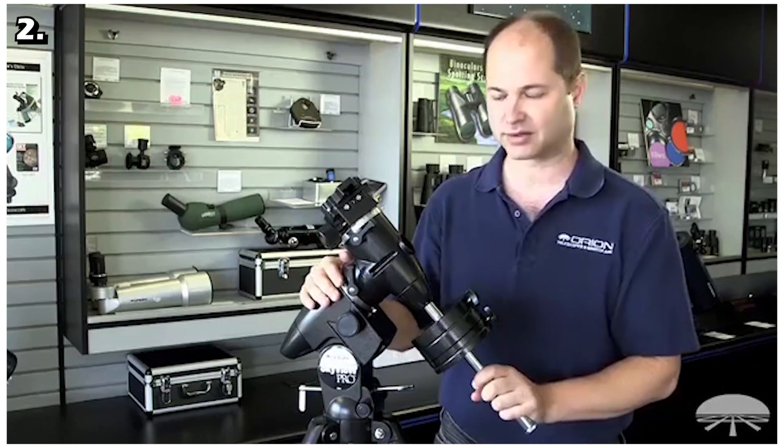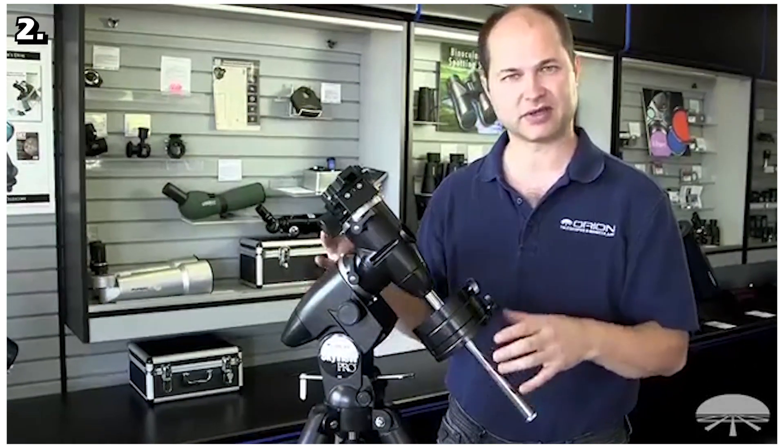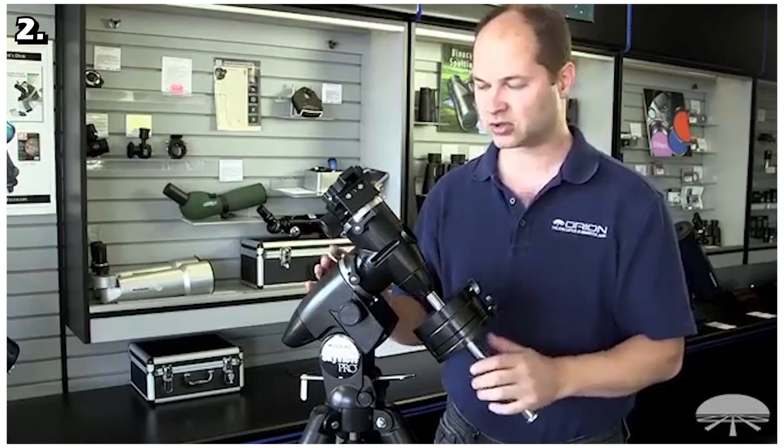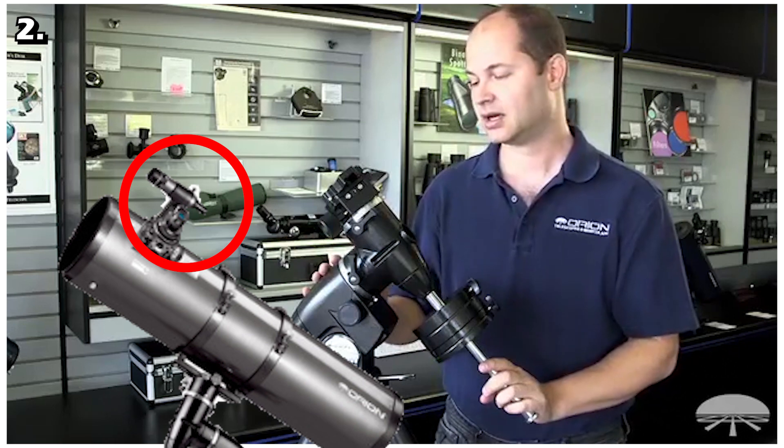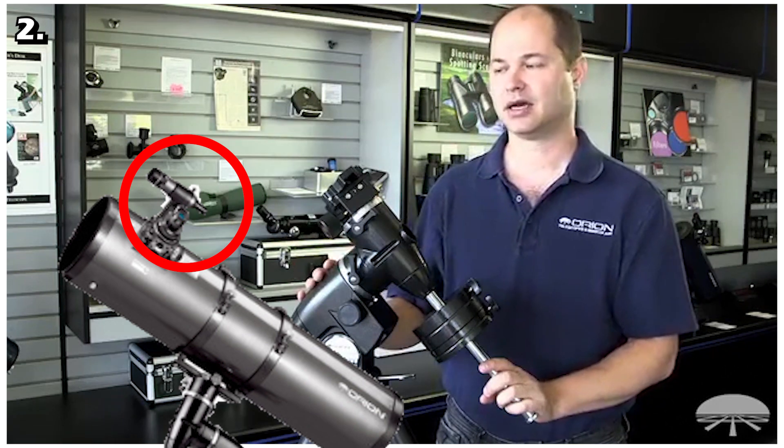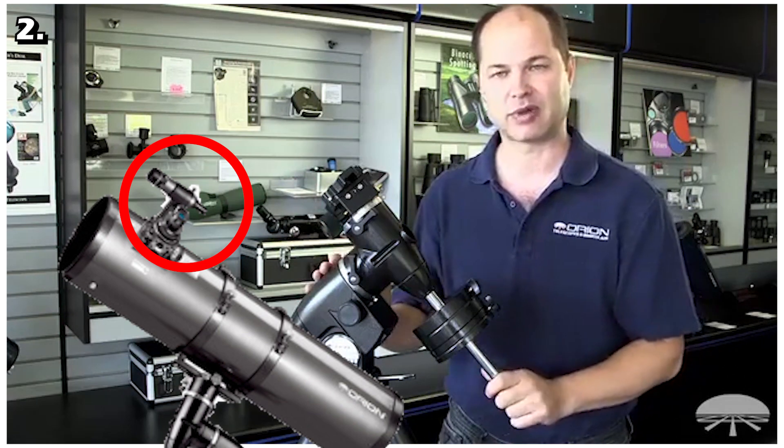Its equatorial mount can be aligned with Polaris, the North Star, so an attached telescope can easily follow celestial objects as they appear to migrate across the night sky. The telescope comes equipped with a Crayford style focuser that allows you to use big 2-inch telescope eyepieces. The Crayford focuser design provides buttery smooth focus control without any backlash.